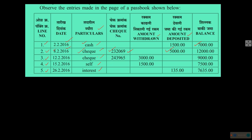Then again a transaction with a different cheque number, where money was withdrawn from the bank. So 7,000 plus 5,000 became 12,000 on 8th February. Then 3,000 was withdrawn, bringing the balance back to 9,000.